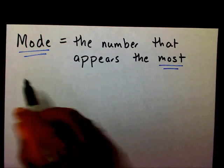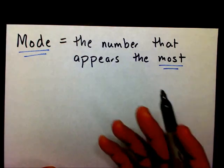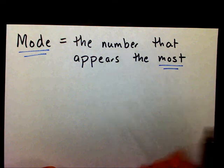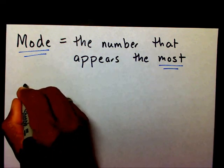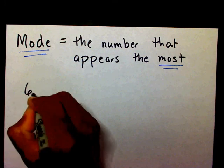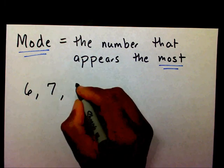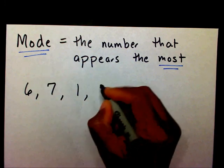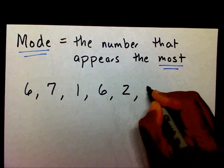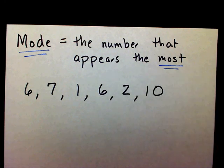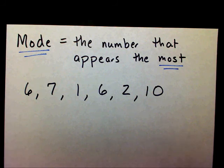We want to find the number that appears the most. So if I gave you 6, 7, 1, 6, 2, and 10 — looking at all the numbers, what number do you see the most?